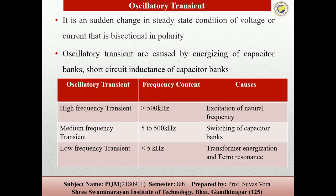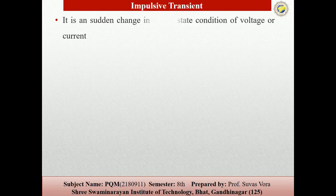High frequency transients have a frequency content greater than 500 kHz and are caused by excitation of natural frequencies. Medium frequency is between 5 to 500 kHz and is caused by switching of capacitor banks. Low frequency transients are less than 5 kHz and are caused by transient energizations and ferroresonance. These are the causes of high, medium, and low frequency oscillatory transients.